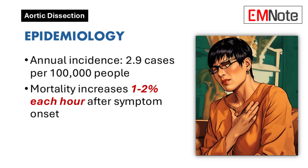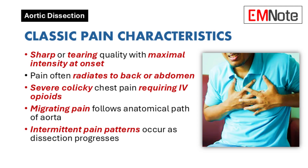Let's start with the symptom we'll see most often: pain. The pain is usually very sudden and severe. Patients describe it as sharp or tearing, and it can actually migrate along the path of the aorta — so a patient might say it started in their chest and is now in their back. Even intermittent pain can still indicate dissection.